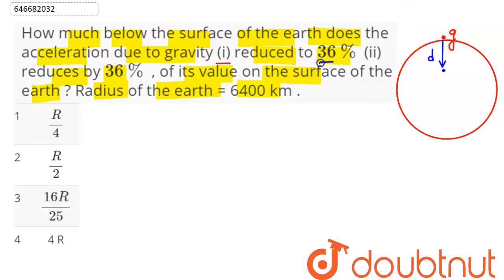The first part it says reduce to 36% which means here at depth d this g dash value is 0.36 of the value of g at the surface. So as we know at depth d we have g dash as g into 1 minus d upon r.